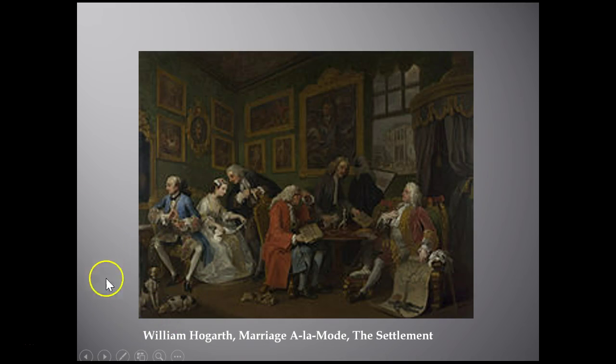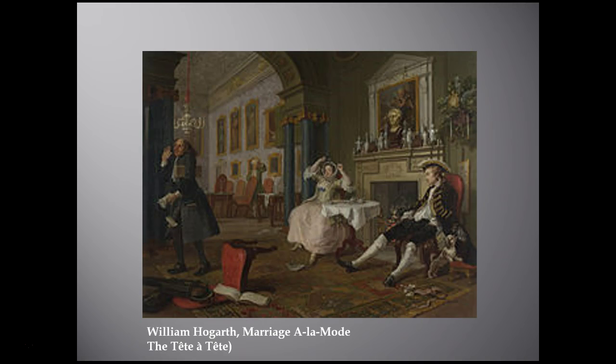This is the second in the series, and it's the one we're really going to focus on the most — the one you are responsible for in the AP list of 250 required works. In the second painting, the marriage of the Viscount and the merchant's daughter is quickly proving a disaster. The tired wife, who appears to have given a card party the previous evening, is at breakfast in the couple's expensive house, which is now in disorder — furniture knocked over and things lying on the floor.